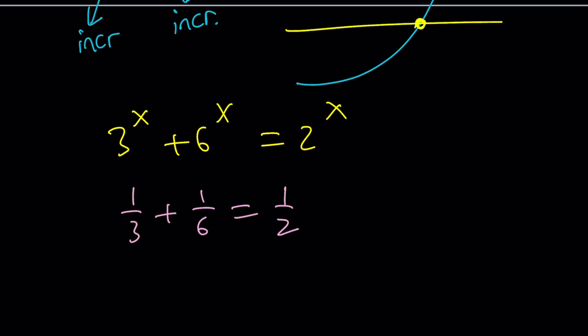In other words, x equals negative 1 satisfies this equation. Because negative 1, what negative 1 does is just take the reciprocal. So 3 and 6 are two such numbers that their sum does not equal a power of 2, but their reciprocals satisfy that relationship. Does that make sense?